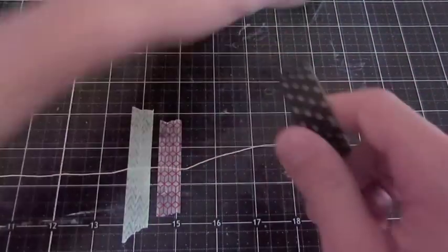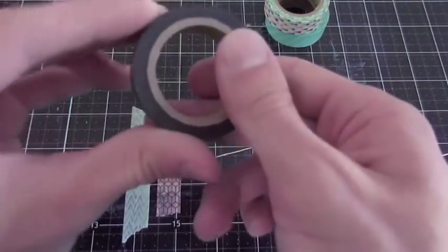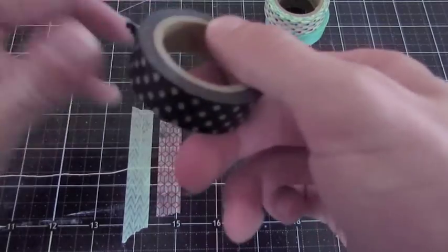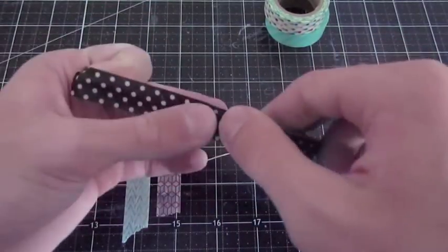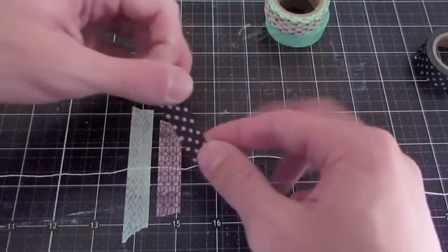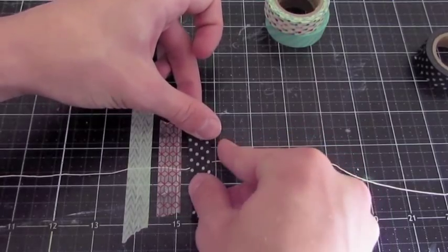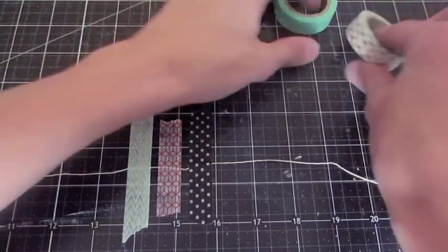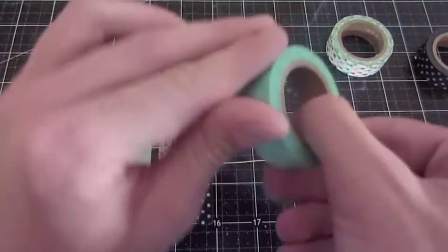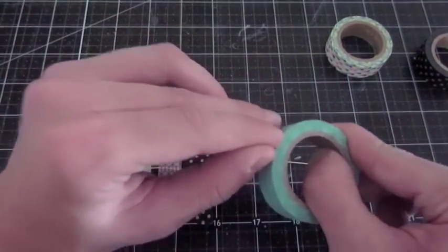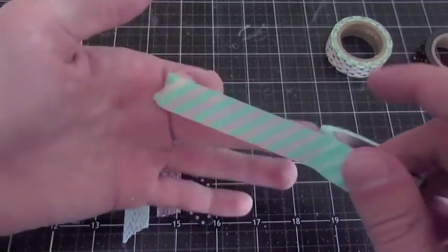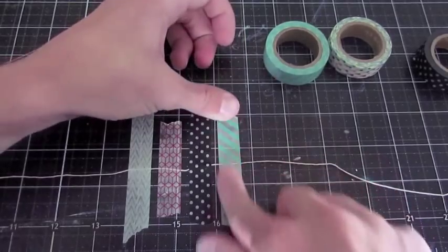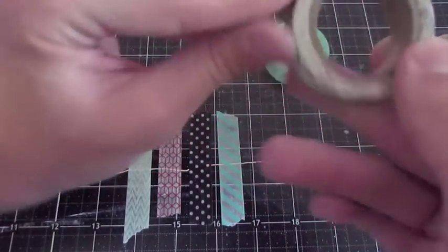And you're just going to continue down the line with your different rolls of tape. So I have my black piece, and I want to just cut off a piece about that long and put it down like that. And then I want some of the teal, which is one of my favorite washi tapes right now. I really like the teal striped pattern. Place it down like this. And lastly is this confetti pattern.